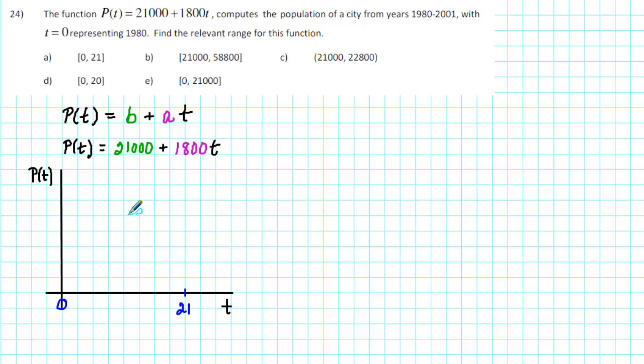When we substitute 0 for t into our formula, we get 21,000 + 1,800 times 0 which is 21,000. 21,000 is the beginning population. So we go ahead and put a point on the P(t) axis and above the t axis.